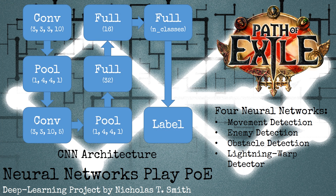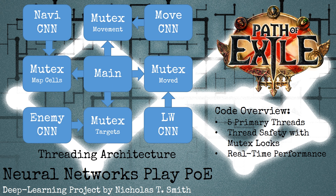The AI uses four convolutional neural networks to respond to visual input from the game. The navigation CNN detects obstacles and open cells, and presents a dictionary of locations mapped to their corresponding label. The enemy CNN detects enemies and provides a list of locations on the screen to attack.